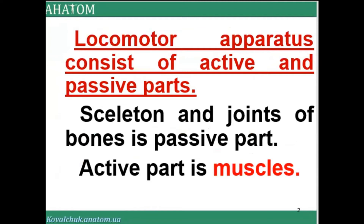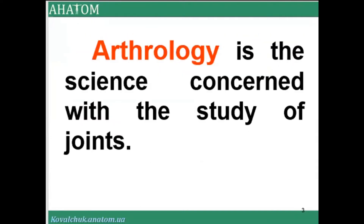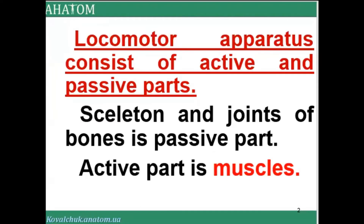The locomotor apparatus consists of active and passive parts. The skeletal and joints of bones form the passive part, while muscles form the active part. After this lecture we continue about muscles today and about arthrology.